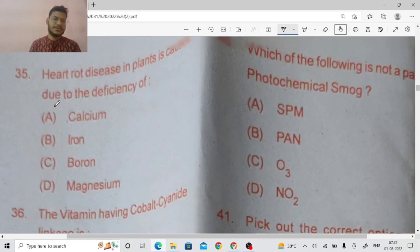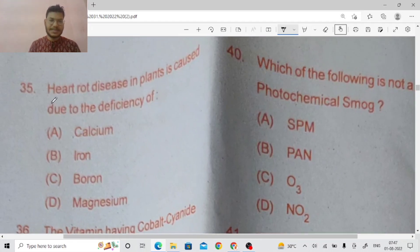Next question number 35, heart disease in plants is caused due to the deficiency of boron is the right answer friends.